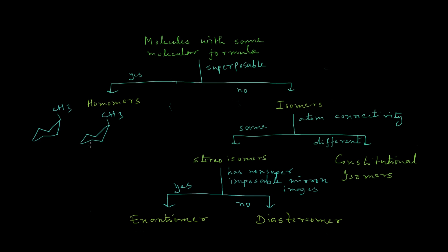These two molecules are the same and are superposable. However, if the CH3 group is in the down or equatorial position, they will not be superposable — in that scenario they will be isomers. Isomers are basically two molecules that have either different atom connectivity, or the same atom connectivity with different orientation of the atoms.